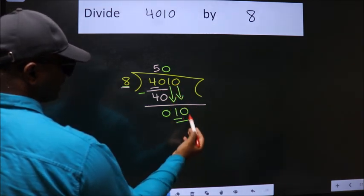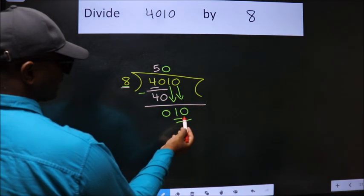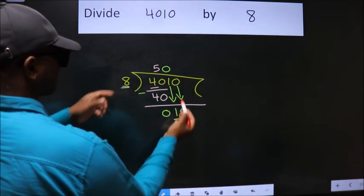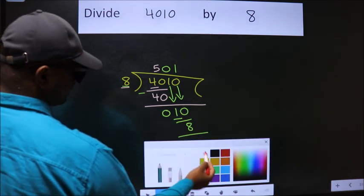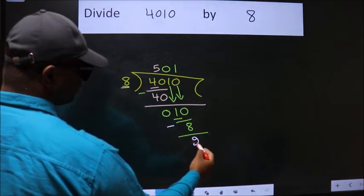So, 10. A number close to 10 in 8 table is 8 once 8. Now, we subtract. We get 2.